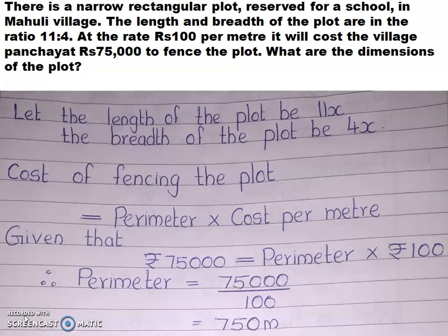I will tell you like a story. You have a village Mahuli. The village panjayat is planning to fence the plot reserved for a school there. In this question you are not given the length and breadth of the rectangular plot directly. Only the ratio is given to you. When you have a ratio, the numbers will be 11x and 4x. That is, we will take the length of the plot as 11x and breadth of the plot as 4x.